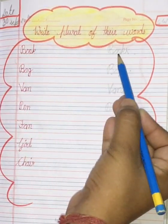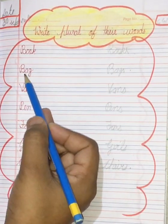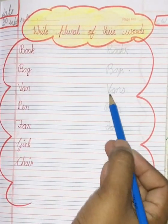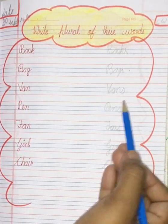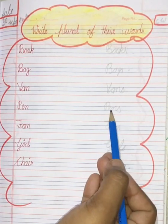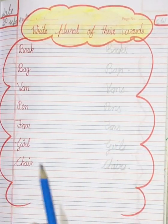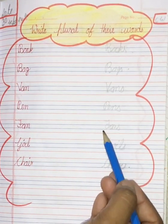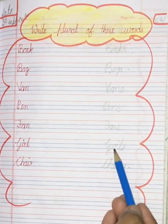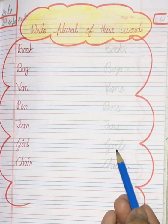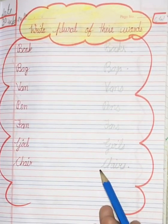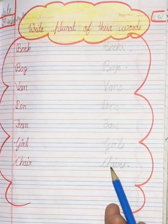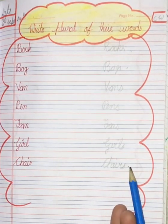Now let's start. Book — B-O-O-K-S — Books. Bag — B-A-G-S — Bags. Van — V-A-N-S — Vans. Pen — P-E-N-S — Pens. Fan — F-A-N-S — Fans. Girl — G-I-R-L-S — Girls. Chair — C-H-A-I-R-S — Chairs.